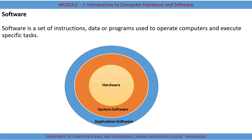Software is a set of instructions, data, or programs used to operate computers and execute specific tasks. It is a collection of programs or instructions through which we can execute or perform tasks on a computer. In the figure, we can see that hardware is the core, the outer area is system software, and the extreme outer area is application software.